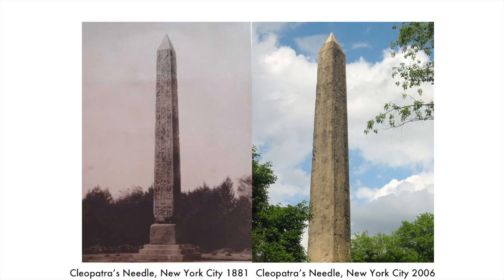How do we know that it's not just normal wear and tear? How do we know that industrialization is responsible? As a final example, here's another limestone sculpture. This one was carved around 2,000 years ago in ancient Egypt, again from limestone. In 1881, the image on the left shows clear hieroglyphics that have persisted since the original time of carving. Only 120 years later or so, the hieroglyphics are no longer visible.